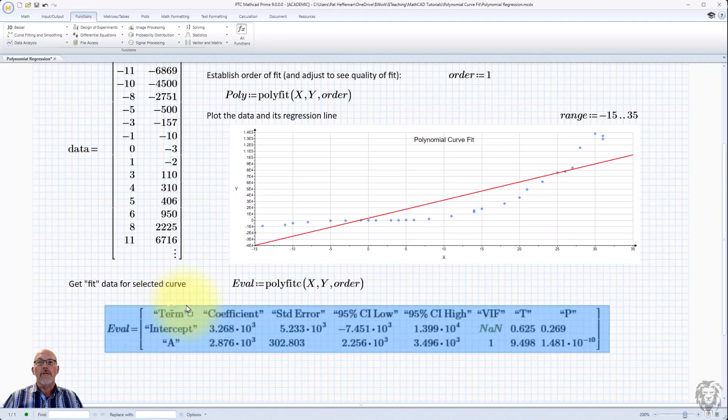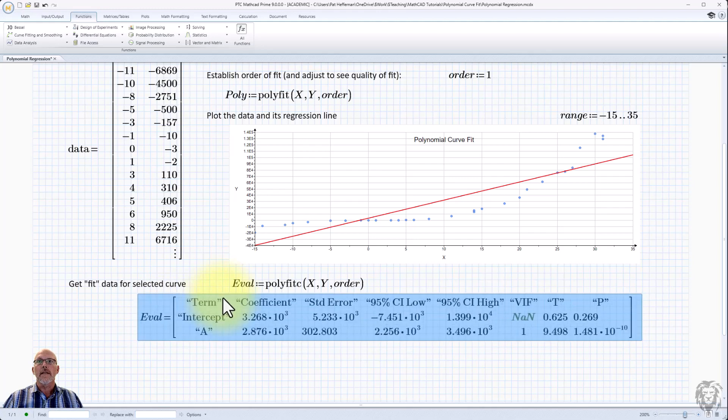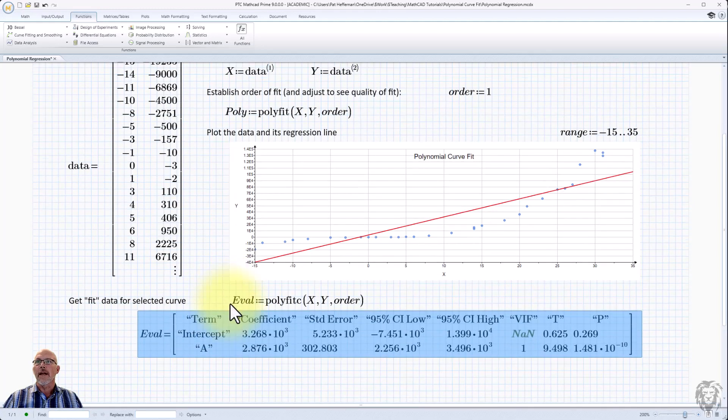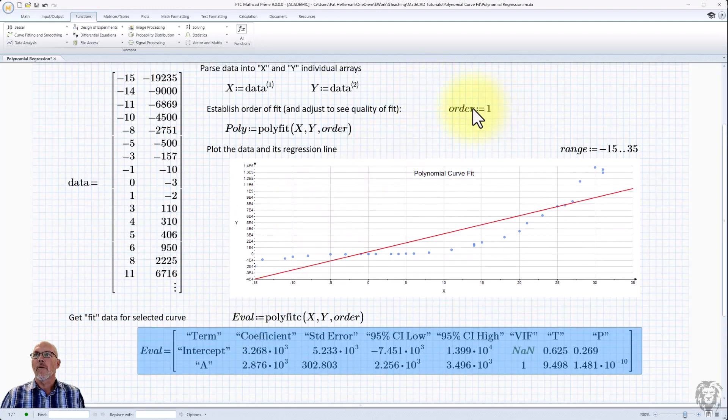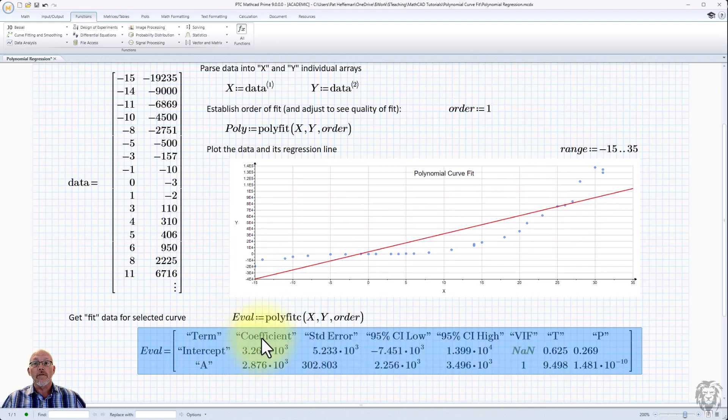And so what you see in the results, and this is kind of nice, the way this all works out. And now you'll see why I put my order up as a separate thing. And so what we have is the function displayed. And now we see the term. So the coefficients, for example, so you have your intercept here, 3.268 times 10 to the third, and the next one down in the coefficients would be the coefficient of the first term. So your mx plus b would be your m term.